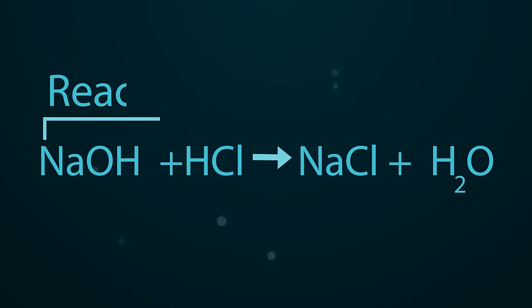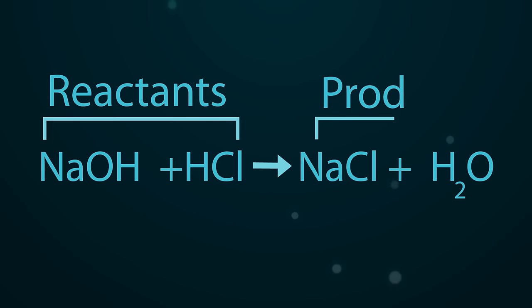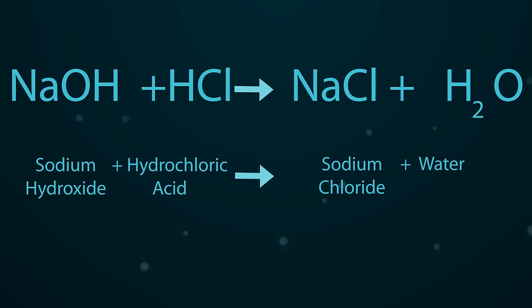The reactants are what you start with, and the products are what are formed. There are two ways of writing chemical equations: word equations and symbol equations.